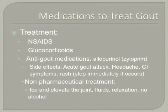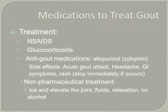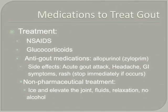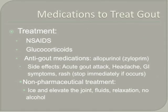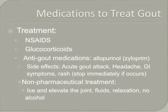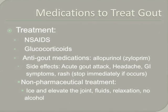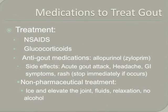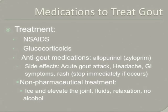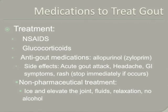Medications that treat gout include NSAIDs, glucocorticoids, and anti-gout medications. Anti-gout medications lower the uric acid level. Allopurinol is an anti-gout medication — these drugs help prevent attacks but don't relieve them, and they generally need to be taken for a lifetime. Patients should not begin allopurinol until after an acute attack has completely settled. As uric acid levels drop, crystals in the joints can shift and actually trigger another attack. Side effects include an acute gout attack, headache, GI symptoms, and skin rash. Skin rash is one of the most common adverse reactions and can be so severe that the medication has to be stopped immediately.